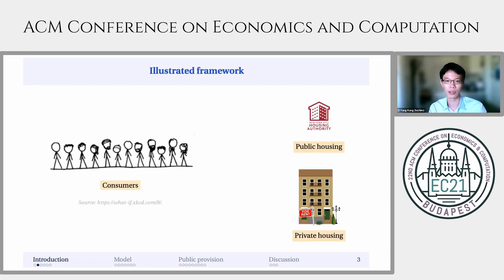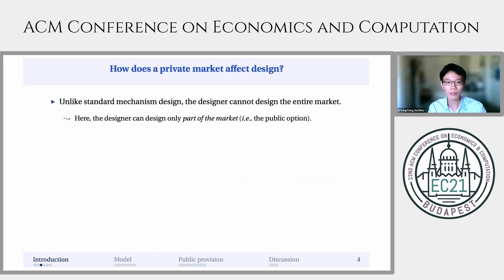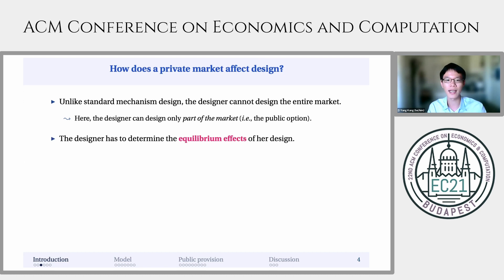To illustrate the framework, let us consider the example of affordable housing. There is a mass of consumers who can apply for public housing, but in addition to public housing, consumers can also rent in the private market. And like in standard mechanism design, the designer in my setting cannot design the entire market. Instead, she can design only the public option, but not the private market. And so the designer has to determine the equilibrium effects of her design on the private market, as well as vice versa.